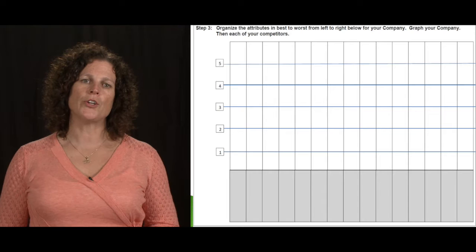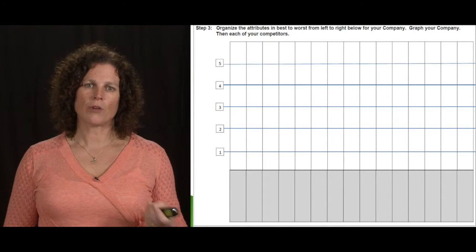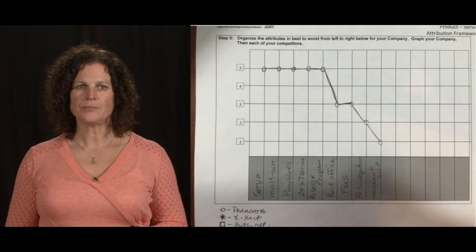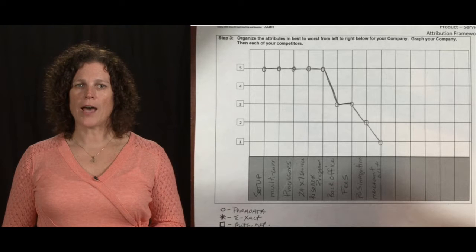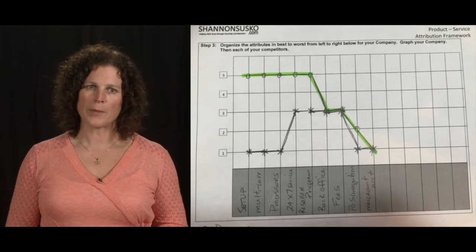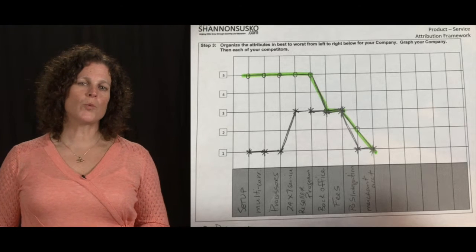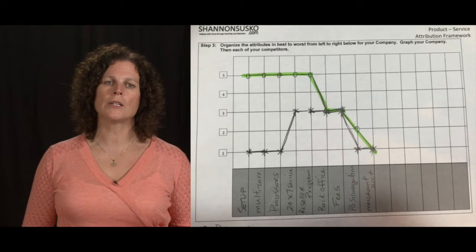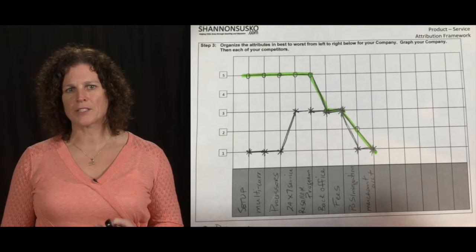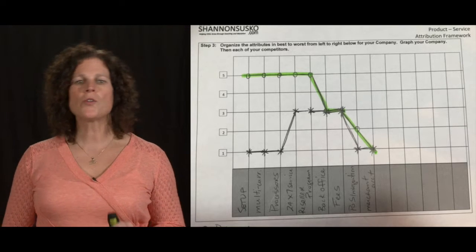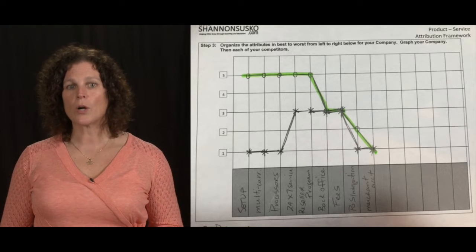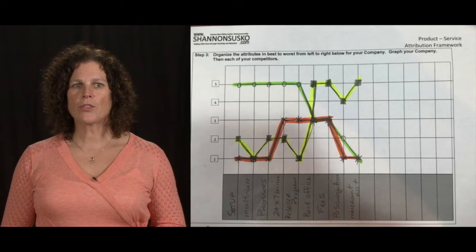The next step I want you to do is map and graph out your first competitor, how you ranked them. Then graph the second competitor and the third competitor. You really just want your top competitors, otherwise this gets really confusing. You want to talk about the ones that you're bumping up against the most, because those are the ones you want to differentiate. Those are the ones where you want to find either differentiate or find the white space.